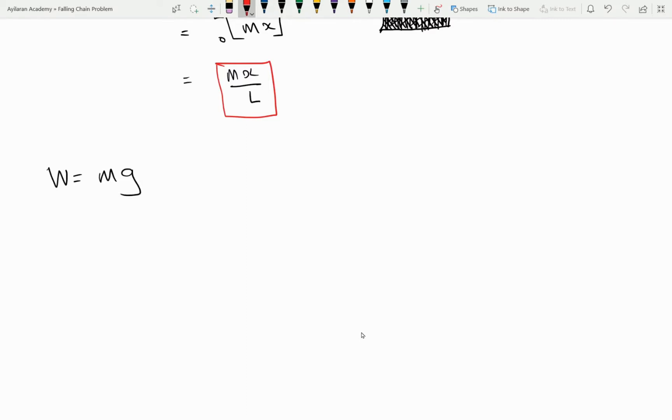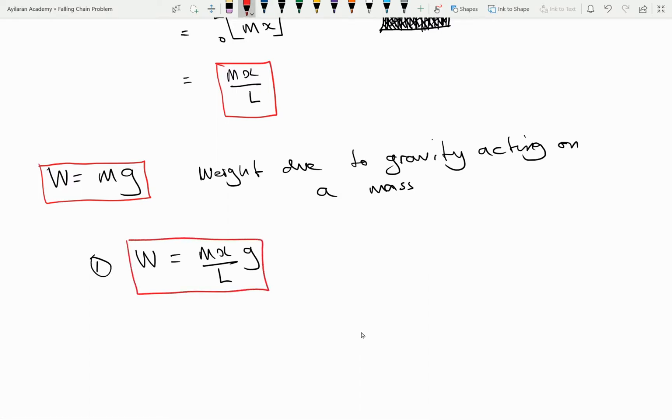So the full weight of the chain on the pan scale is going to be MG because that's the standard expression for an object's weight due to the force of gravity. However we have an expression for the full mass and that mass is MX over L. So we substitute our previous expression into the expression for the weight of the chain.